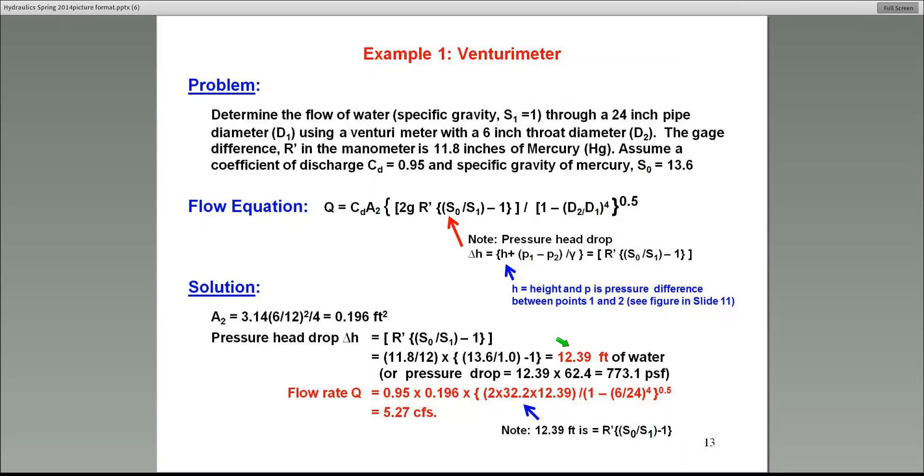Yes, are you all not able to hear or something? Let me see. Could you please slow down? Yes, I will do that. Somebody said about CD, will it be given in the problem? Yes, the CD will be given in the problem. If not, as I said, you might have to assume it. For a venturi meter, it's about 0.95. And for an orifice meter, typically around 0.6.